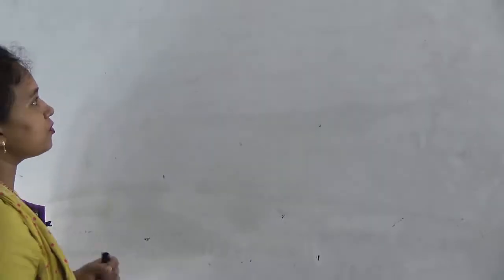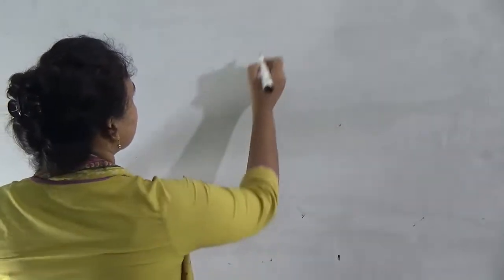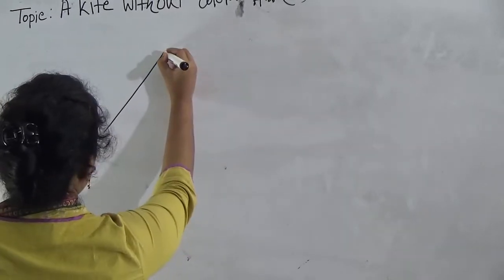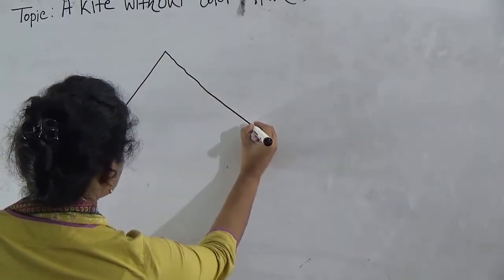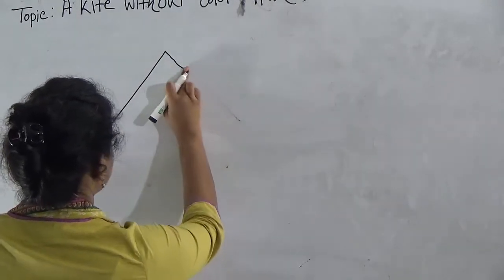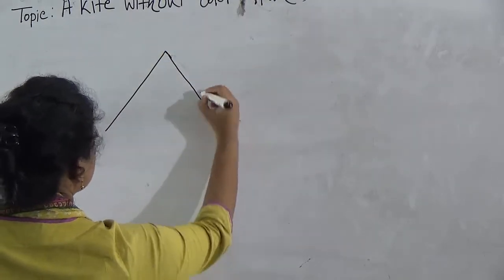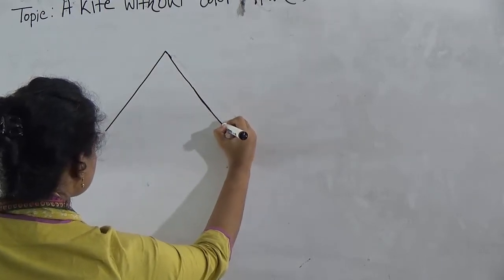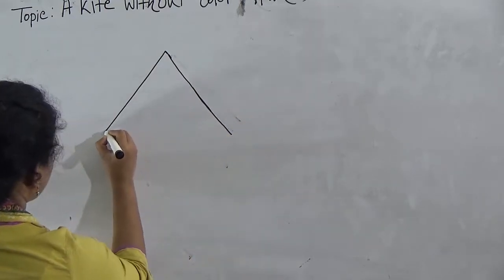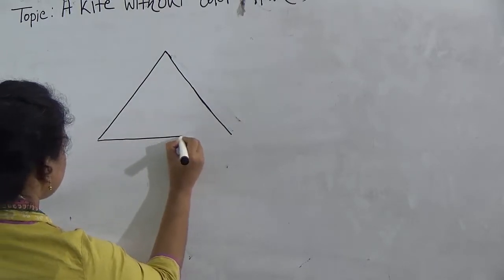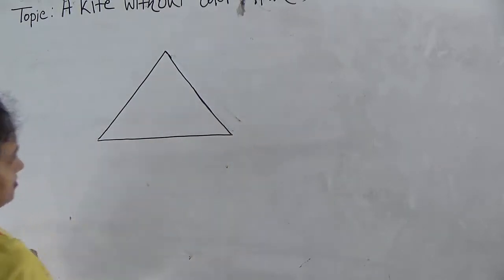Look at the board. You know all shapes name. You know the shapes triangle also. This is the triangle. We made like this triangle first. You all know this is triangle.